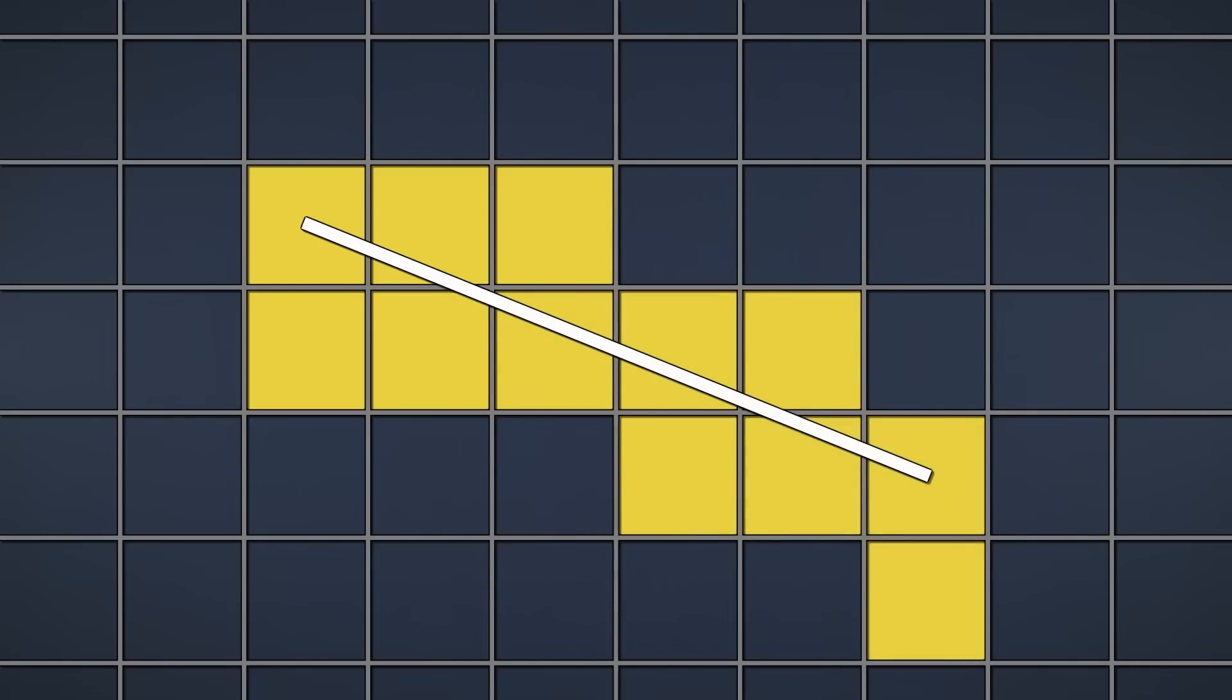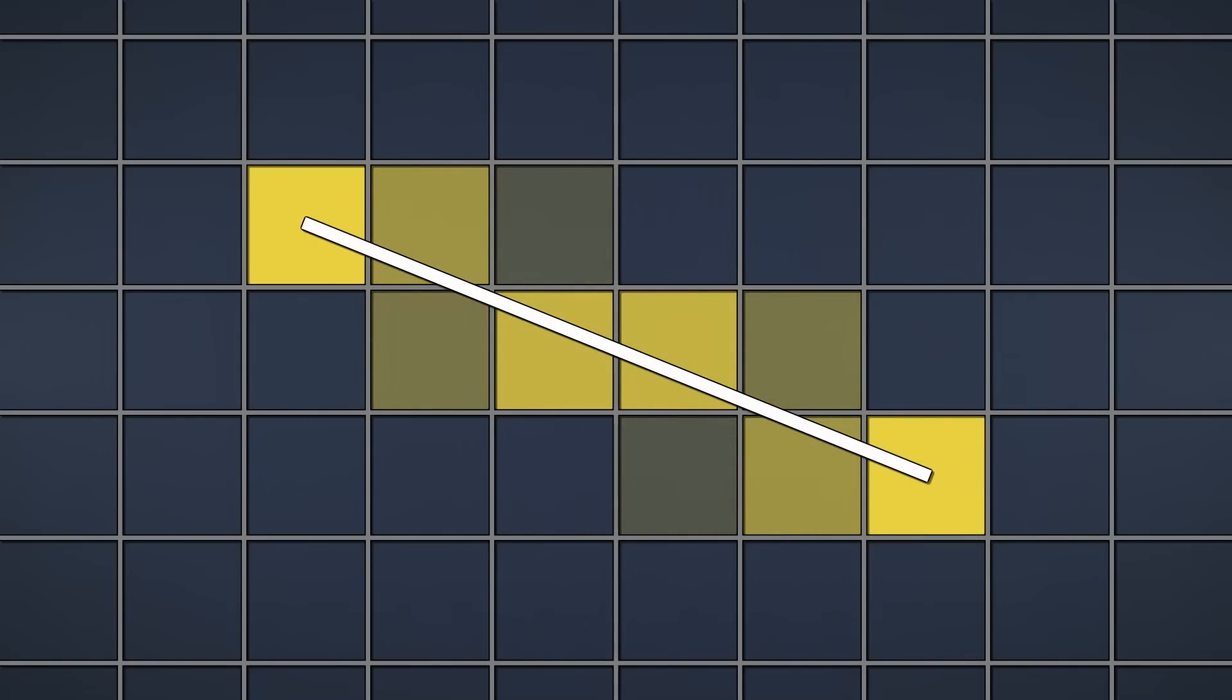Then we calculate their opacity based on the vertical distances. Cool. Except something is off. The start and end pixels are fully opaque because we're directly on them. However,